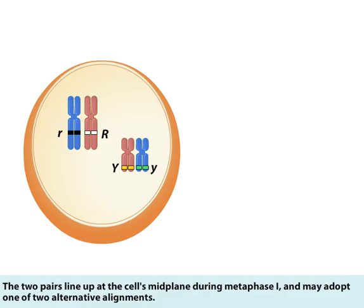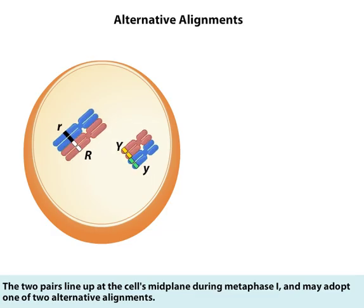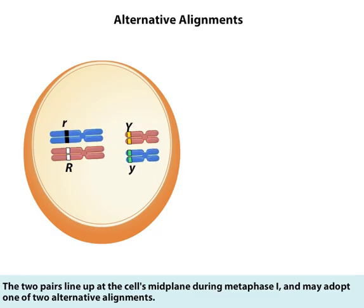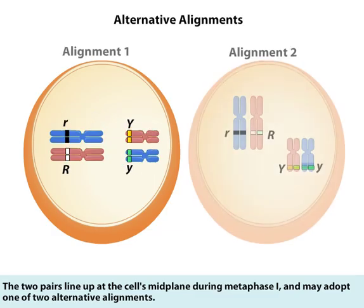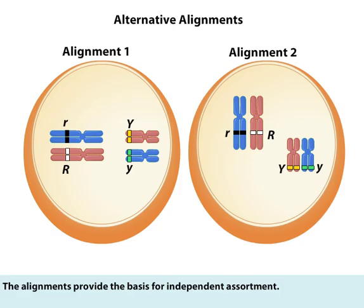The two pairs line up at the cell's midplane during metaphase I and may adopt one of two alternative alignments. The alignments provide the basis for independent assortment.